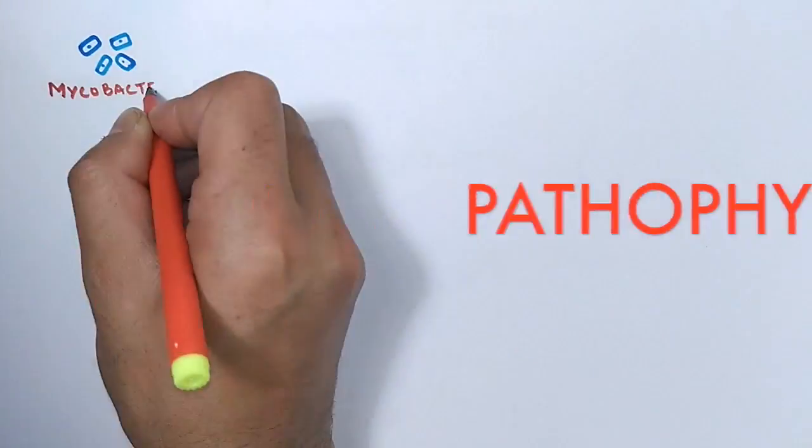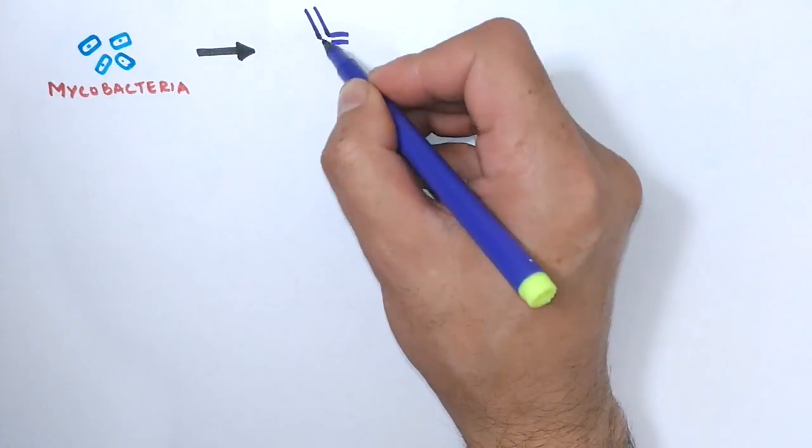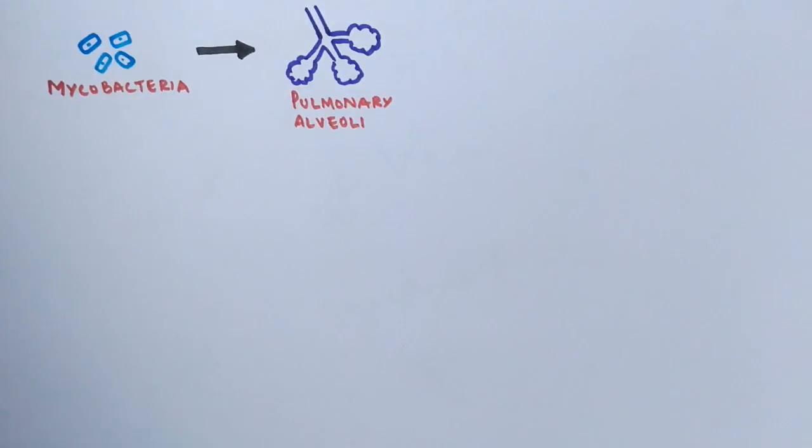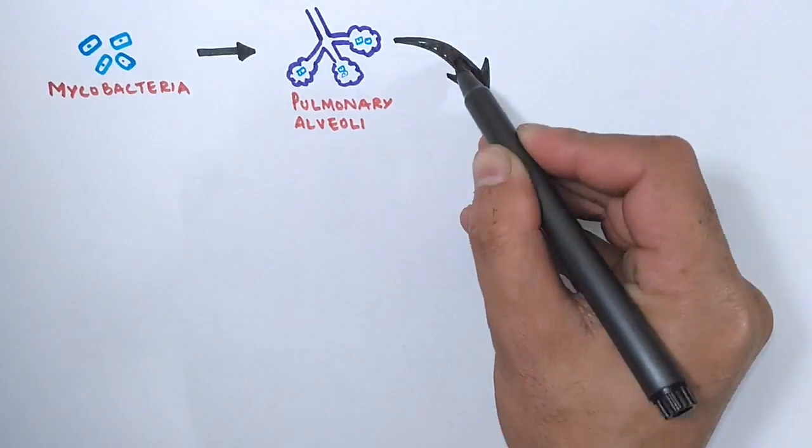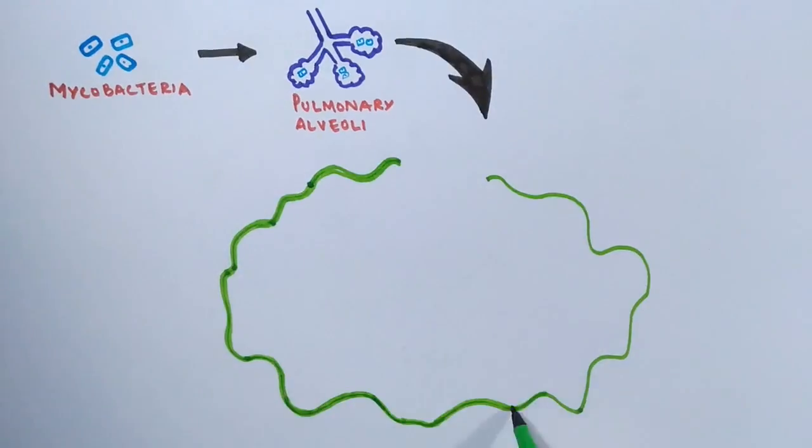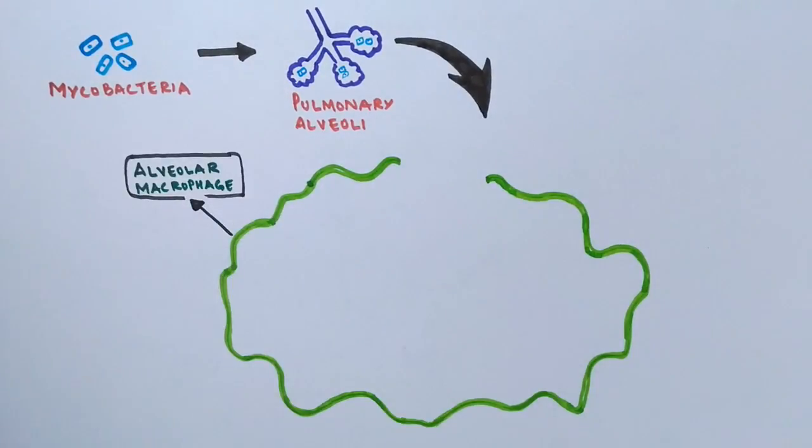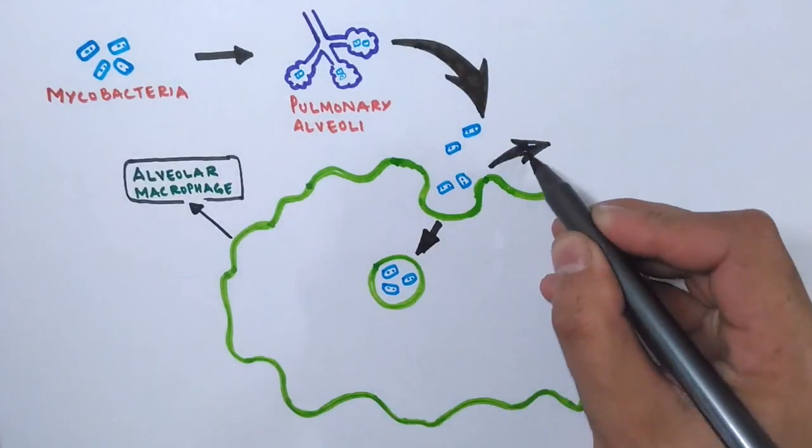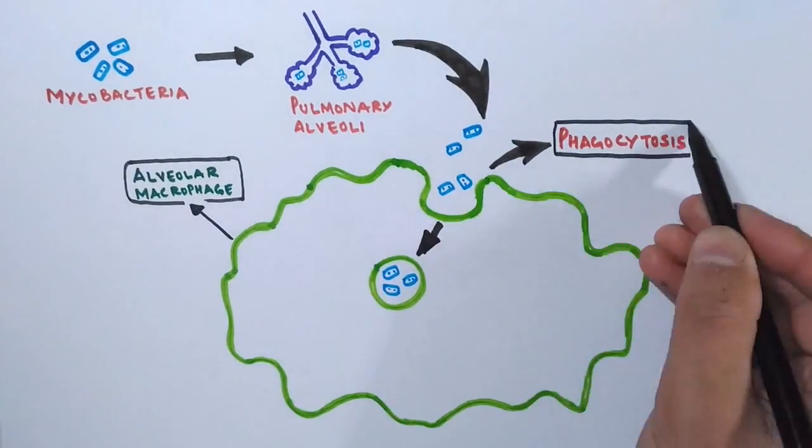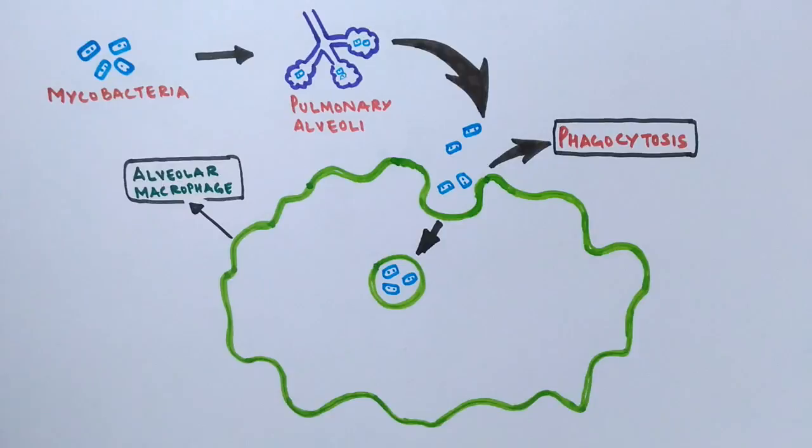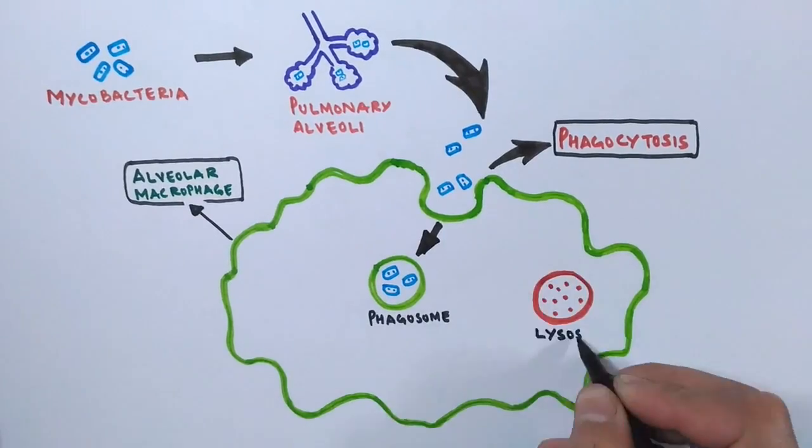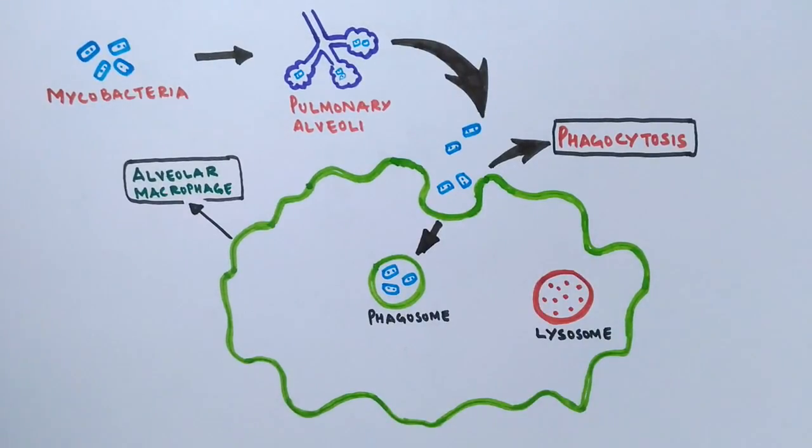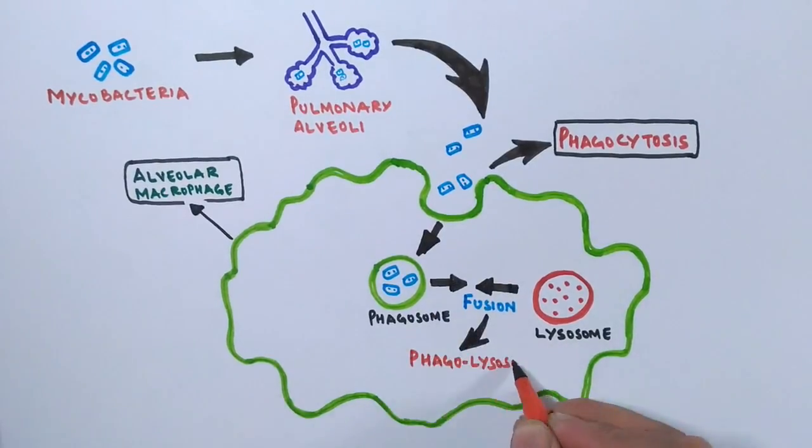As we have already seen the pathophysiology of tuberculosis disease in the previous video, this mycobacteria goes through the air passage and resides in our pulmonary alveoli. In the pulmonary alveoli the mycobacteria is captured by the macrophage into phagosome through a process known as phagocytosis. In macrophage the fate of phagosome is to get fused with lysosome in order to degrade the mycobacteria in phagolysosome.